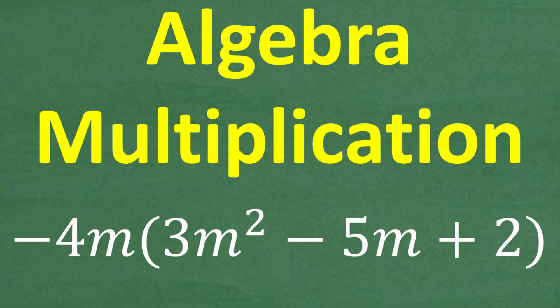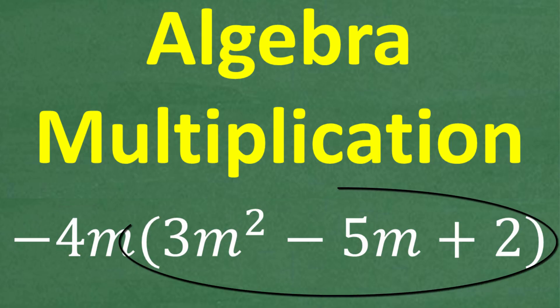We have negative 4m times 3m squared minus 5m plus 2. So this is a multiplication problem. We're going to take this thing and multiply it by this thing.